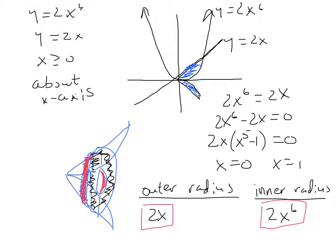If we were to graph the two functions y equals 2x to the sixth and y equals 2x, we would wind up with this curve y equals 2x to the sixth and this line y equals 2x. We can see that they would intersect at a couple of points here.